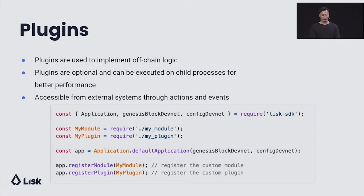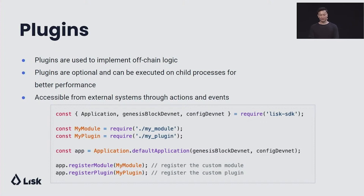Next up is off-chain architecture. As I mentioned, plugins are the main way to implement off-chain logic. Plugins are always optional, and they can also be executed on child processes for better performance. These are also accessible from external systems through actions and events. Similar to the code sample shown before: first you require your application, genesis block, and configuration; then you require your own custom plugin; and finally, you just register your plugin.